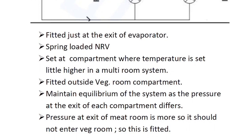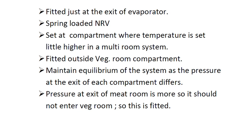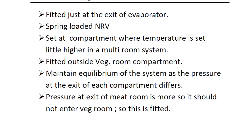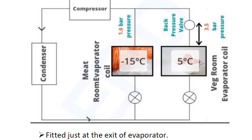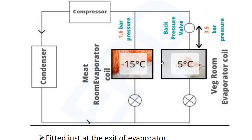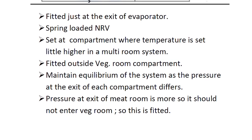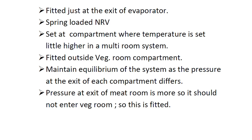Now let's look at the function. The back pressure valve is fitted just at the exit of the evaporator. It is a spring-loaded NRV — non-return valve — set at the compartment where the temperature is set a little higher in the multi-room system. Since the temperature in the veg room is set higher compared to the meat room, it is fitted outside the veg room compartment to maintain equilibrium of the system, as the pressure at the exit of each compartment differs.